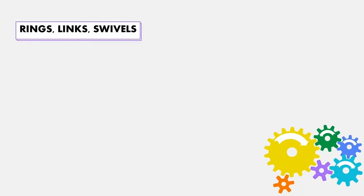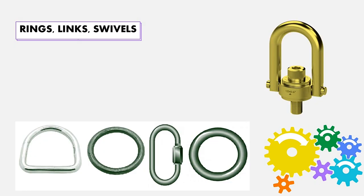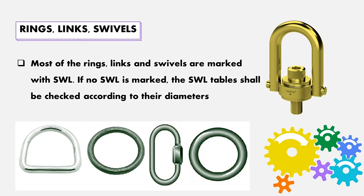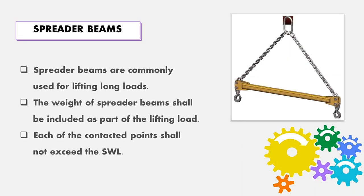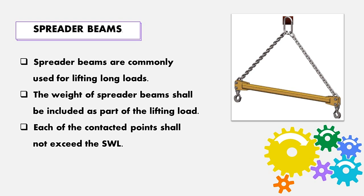Rings, links, and swivels: most are marked with the safe working load. If no safe working load is marked, the safe working load table shall be checked according to the diameters. Spreader beams are commonly used for lifting long loads. The weight of the spreader beam shall be included as part of the lifting load. Each contact point shall not exceed the safe working load.